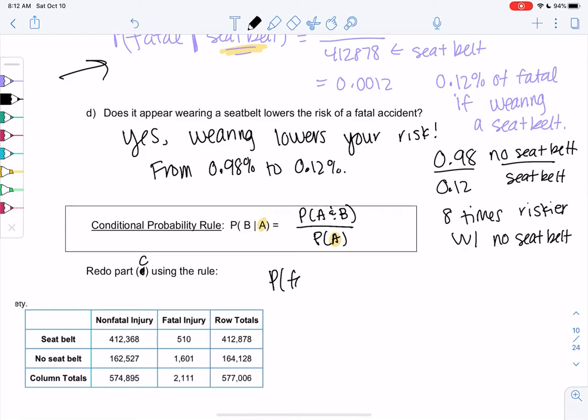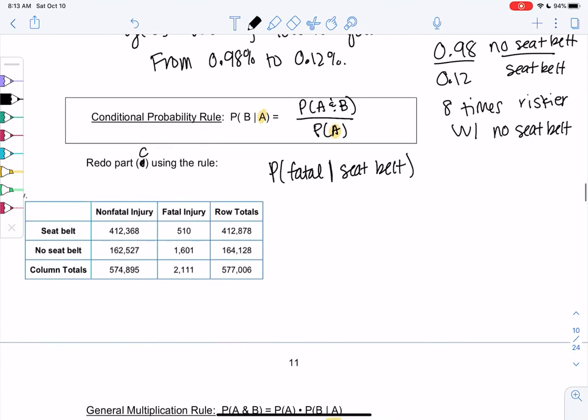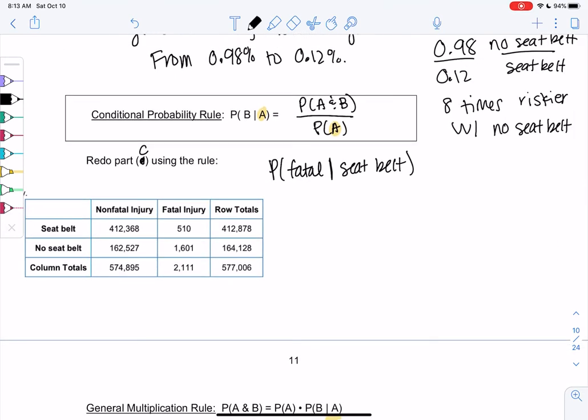We'll do probability of fatal given a seatbelt. Just so we can see how the formulas work, we'll try it. But I again think what we did was faster and more efficient. If you want to use a formula, it's the and case on top. So fatal and seatbelt divided by the probability of the given, the probability of seatbelt.